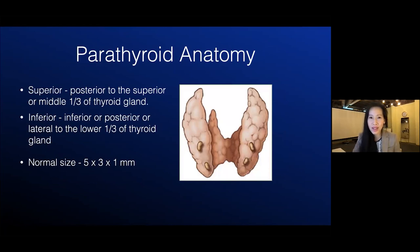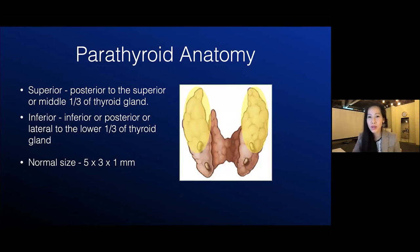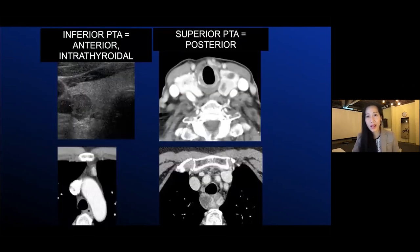The anatomy: there are four glands that could potentially be the culprit. There are two superior glands located posterior to the superior or middle one-third of the thyroid, and two inferior glands that are inferior, posterior, or lateral to the lower one-third of the thyroid. Those are the typical, eutopic locations. A normal parathyroid is about the size of a grain of rice and typically not seen on imaging. However, when there is an adenoma, they are enlarged and visible on imaging and on 4DCT.